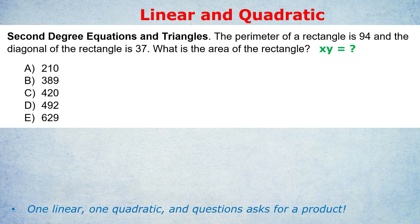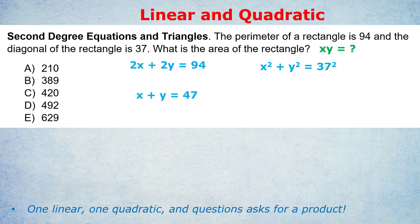Let's just solve it mathematically. The perimeter of a rectangle is 94, which means 2x plus 2y equals 94. If you call one side x and the height of the rectangle y, you have 2x's and 2y's equaling 94 at the perimeter. The diagonal, via Pythagoras, gives us x squared plus y squared equals 37 squared. You probably know the method by now: first, we simplify the linear equation by dividing by 2. And now comes the killer blow — we are going to square both sides of that equation.